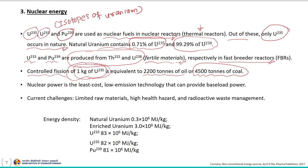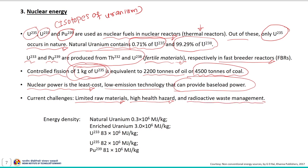Thorium is abundantly available in India in the form of monazite ore. Nuclear power is the least-cost, low-emission technology that can provide base load power, but it has certain challenges: limited raw materials, high health hazards, and radioactive waste management. The energy density of natural uranium is 0.3×10⁶ MJ/kg, enriched uranium is 3×10⁶ MJ/kg, with respective energy densities for uranium-233, uranium-235, and plutonium-239 noted as well.